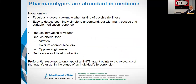Pharmacotypes are actually par for the course in many fields of medicine. And I'm going to now talk about hypertension. High blood pressure is fabulously relevant as an example for psychiatric illnesses — very easy to diagnose on a top level, seemingly easy to understand, but medication responses are highly variable.